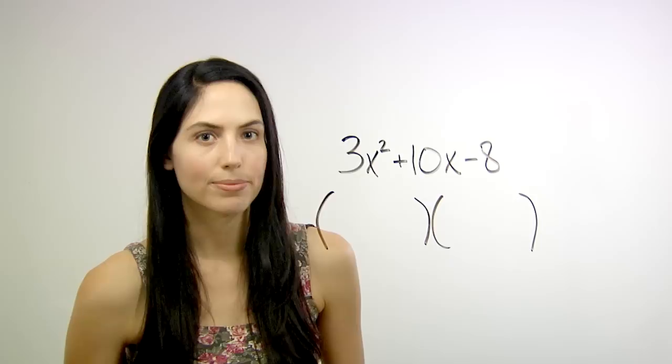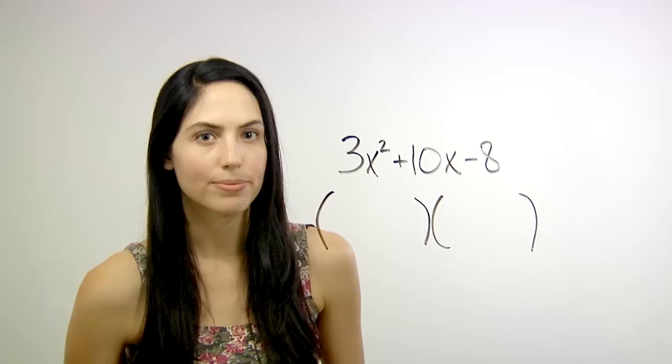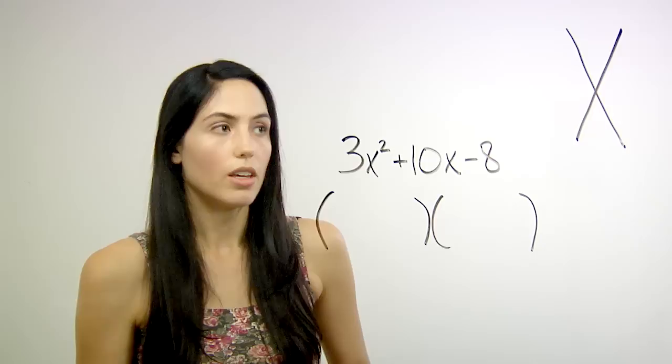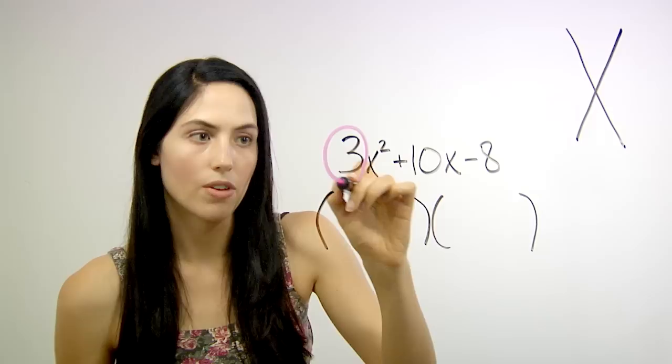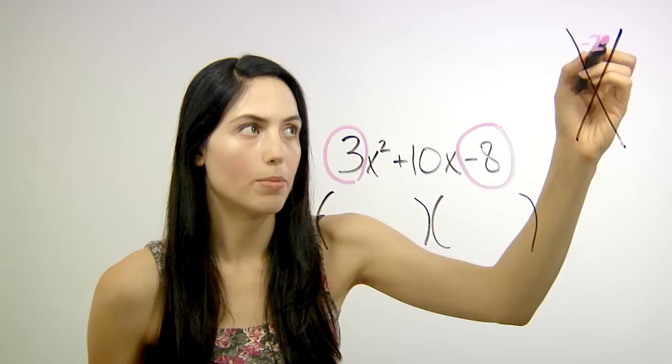So for the magic X method, you do literally draw an X off to the side. Now, at the top of your X, you're going to put the number you get for multiplying your first coefficient, 3, by your last constant, negative 8, which is negative 24. And you put that in the top of your X.